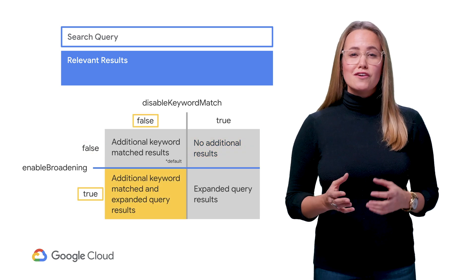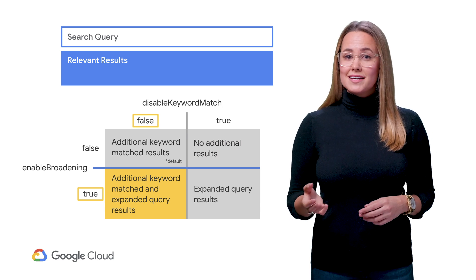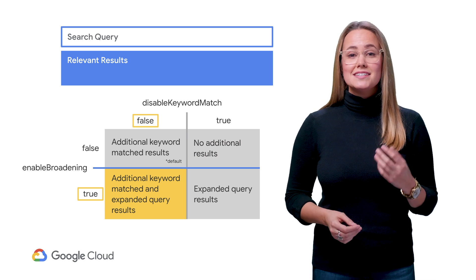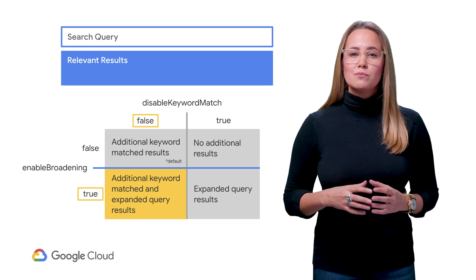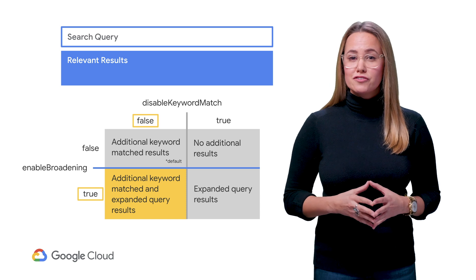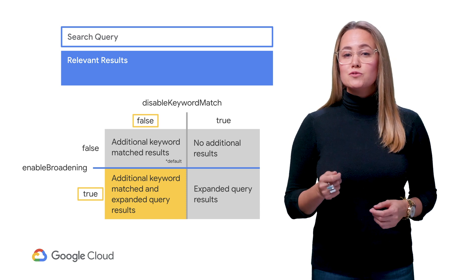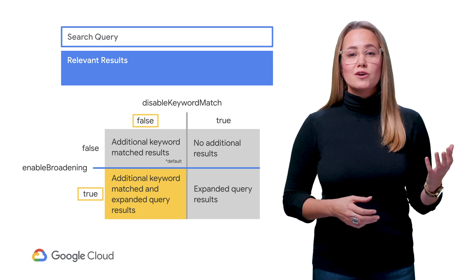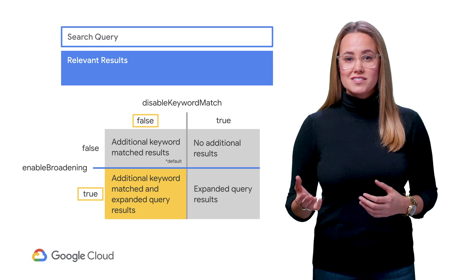If you flip these and have Enable Broadening set to true and Disable Keyword Match set to false, you'll get the maximum number of jobs returned for a search. The most relevant jobs will be followed by Keyword Matched and Expanded Query jobs.